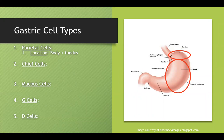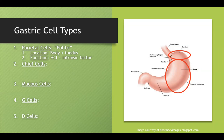Parietal cells are located in the body and fundus. Their function is to secrete HCl and intrinsic factor. My mnemonic: parietal cells are very polite — they always say 'hi,' which reminds you of the two compounds they secrete: HCl and intrinsic factor. They're also the first glandular cell — in the upper glandular layer — so they're the first gland to greet anything coming into the system.